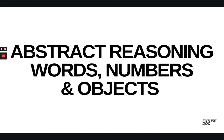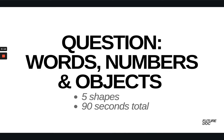Welcome to this fifth module of the abstract reasoning section. Here we're going to be talking about words, numbers and objects. We'll start with some questions for you to have a go at. As usual, we'll be doing five shapes — just one question set — and we're going to give you 90 seconds in total to have a go at that.